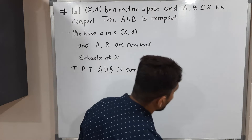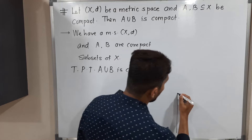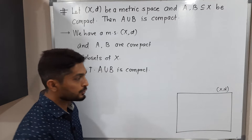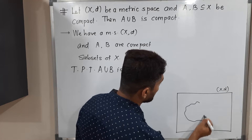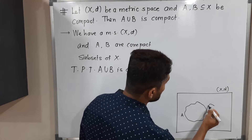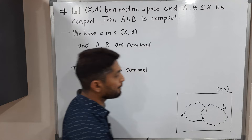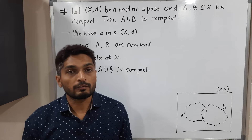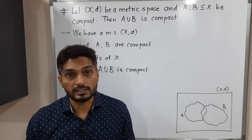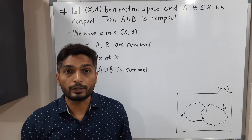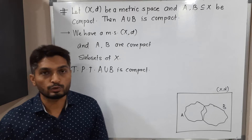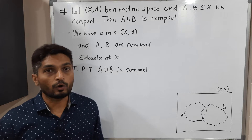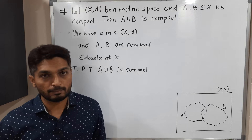Let me illustrate this. We have a metric space (X, d). A and B are two subsets of X which are compact — suppose this is set A and this is set B. We have to prove their union is also compact. Recall: a set is compact if every open cover has a finite subcover. We are going to use that definition to prove A∪B is compact, meaning we take any arbitrary open cover of A∪B and prove it has a finite subcover.